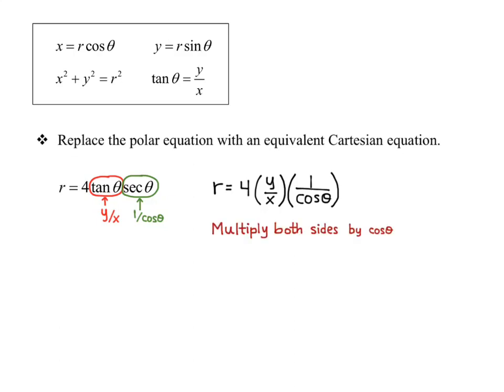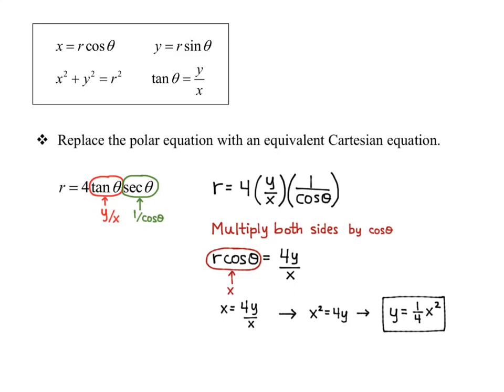Next, I want to multiply both sides by cosine theta, because if I do that, I see that I'm going to get an r cosine theta on the left-hand side, which I can replace with x. So I have r cosine theta equals four y over x, and r cosine theta is x. So I have x equals four y over x, and now I just solve for y: x squared equals four y, and y equals one-fourth x squared.